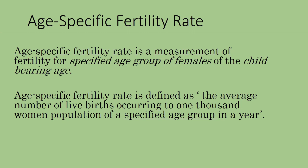So, we need one more particular fertility rate, so that we can concentrate on a particular age group — that means age-specific fertility rate. In age-specific fertility rate, we measure the fertility for a specified age group of females of childbearing age, that is 15 to 49 years. For example, 15 to 19 years or 20 to 24 years. Age-specific fertility rate is defined as the average number of live births occurring to 1000 women of a specified age group in a year.